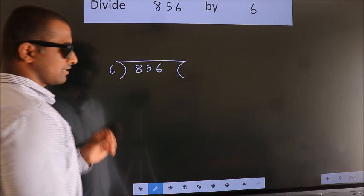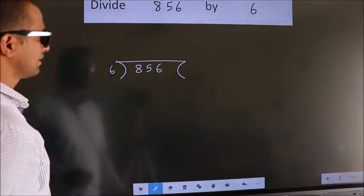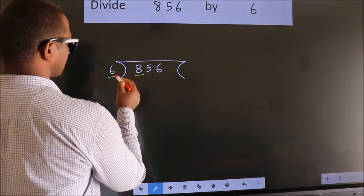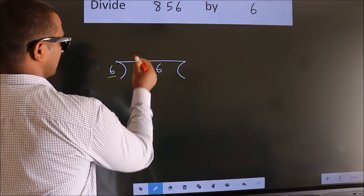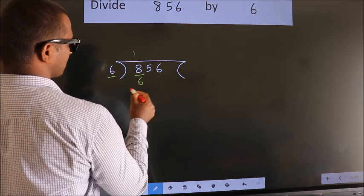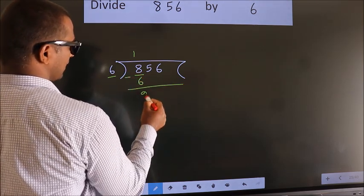This is your step 1. Next, here we have 8, here 6. A number close to 8 in 6 table is 6 1s 6. Now we should subtract. We get 2.